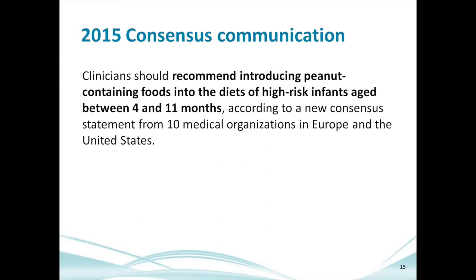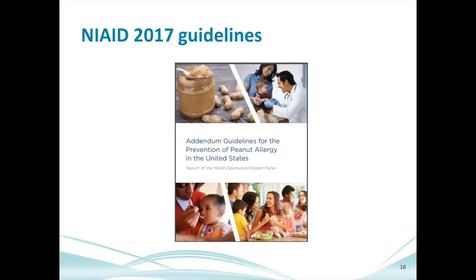In 2015, immediately after publication of the LEAP study, we gathered with nine other medical organizations around the world. We were finally able to use the word 'should' — clinicians should be recommending introducing peanut-containing foods for high-risk infants between four to eleven months of age. Prior to that, no communication had used such definitive language. Then in 2017, the NIAID guidelines were published specifically for preventing peanut allergy.